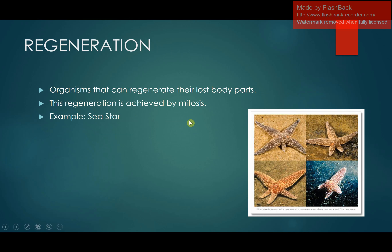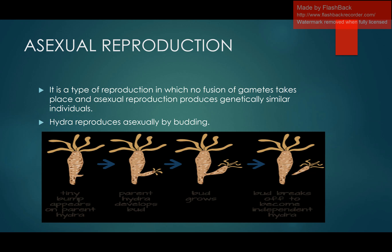Regeneration is the phenomenon in which organisms can reproduce or regrow their lost body parts. This phenomenon is common in some animals as well as in plants. Here we have an example of a sea star — we can see how the sea star can regenerate its arms by the process of Mitosis, because Mitosis produces exactly similar cells to those that were lost.